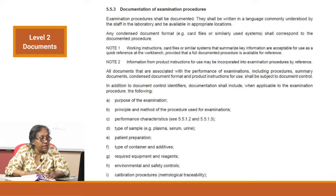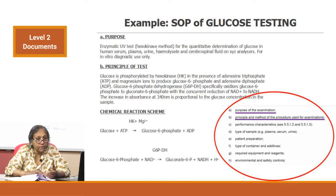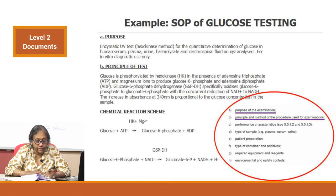Let us examine each of these sub-points one by one. Sub-component A is the purpose of examination, and sub-component B is the principle and method for the procedure used in the examination — going up to T. For purpose of examination — using a glucose testing SOP as an example — whatever the purpose is, it will be given in your kit insert or manufacturer's instructions. Just look at that and write it down. The principle will similarly be given in your kit insert.